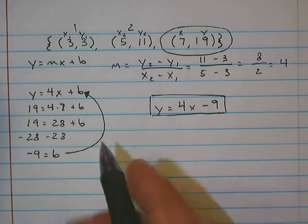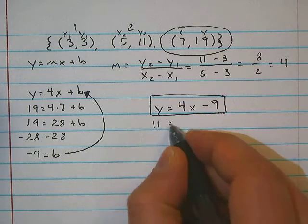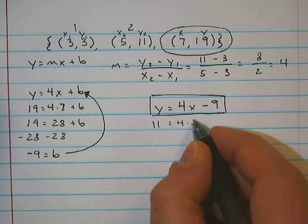Now, before we move on, we want to check our work. So I'm going to use a different point to check our work. I'll use 5, 11. So x value is 5 and y value is 11.